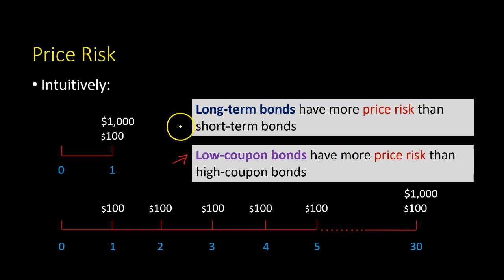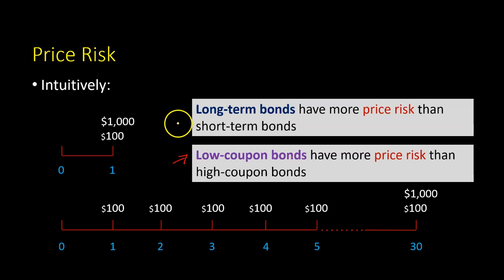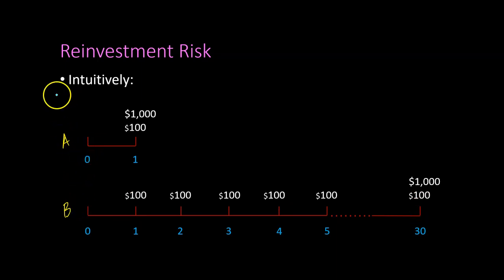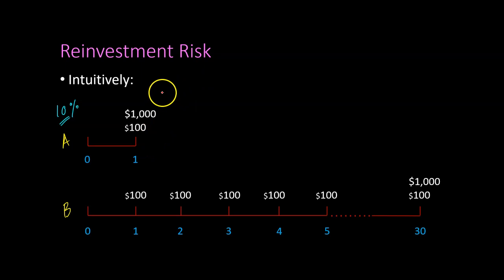So now let's talk about what reinvestment risk is and how that is a function of a bond's time to maturity and coupon payments. Consider two bonds, A and B. Both are similar in terms of face value and coupon payments. The difference is that one bond is short term — maturing in one year — and the other is long term. Further assume that you invested in both bonds A and B at time period zero when the yield to maturity on both was 10%. Now let's suppose one year later, the yields on these bonds go down — maybe the interest rates went down — and now these bonds are yielding something like 5%.